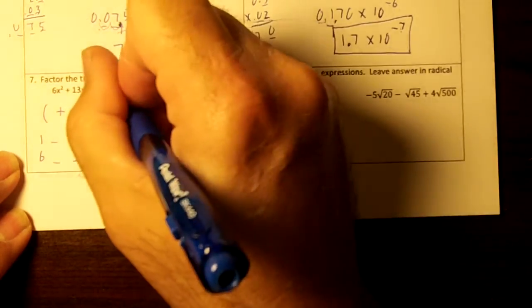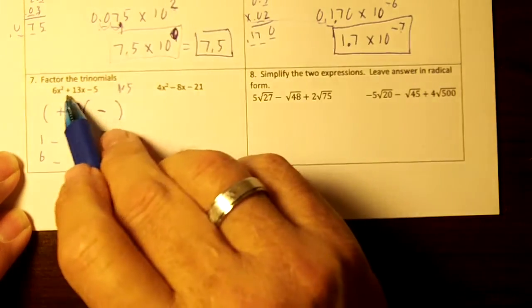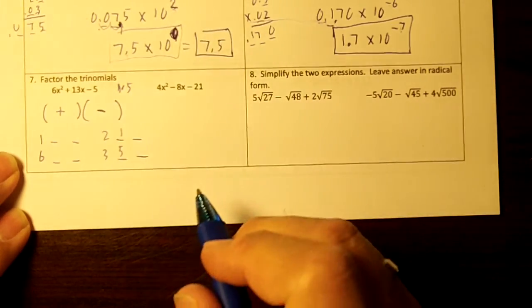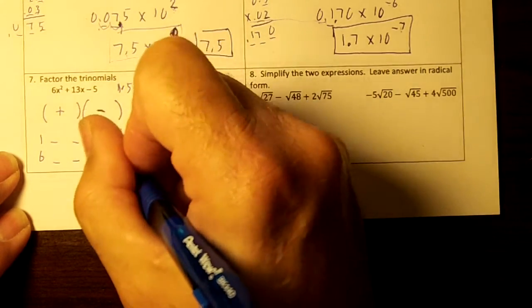And my only factors of 5 are 1 and 5. I need to subtract and get 13. So the 5 goes here. The 1 goes here. This should be quicker. 15 and 2. Draw your x.